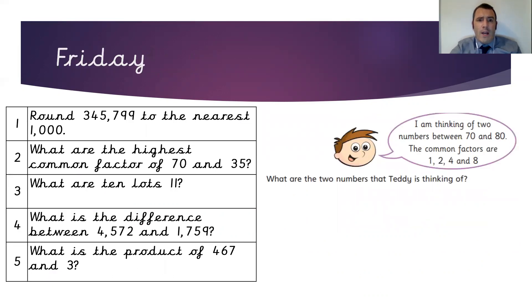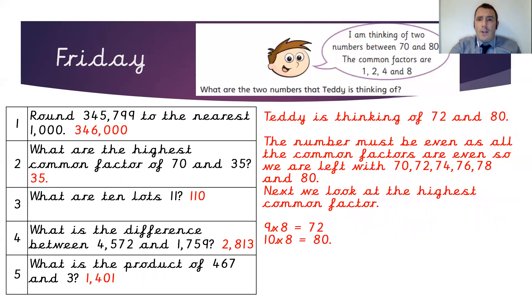Here we are, Year 5. We've made it to Friday. Here are your questions for today. Pause the video when you're ready to start and press play when you're ready for your answers. Teddy's given us a bit of a challenge here. He's thinking of two numbers between 70 and 80 that have common factors. The numbers Teddy is thinking of are 72 and 80. The numbers must be even because most of the factors—2, 4, and 8—are even numbers. So we can take away the odd numbers already. We know we've got 70, 72, 74, 76, 78, and 80.